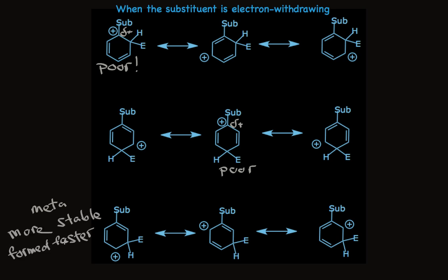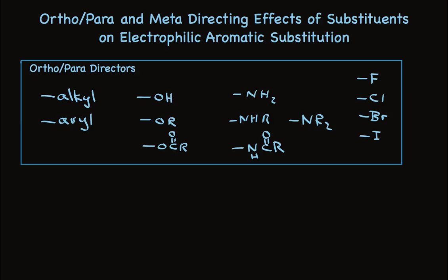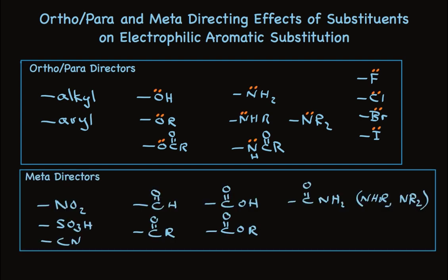Meta directors, as they're called — substituents that favor substitution at the meta position — are all electron-withdrawing substituents. Meta substitution is always slower than benzene overall, but it is favored relative to ortho and para for these groups. Looking at the table, alkyl and aryl groups are electron-donating by induction, while other ortho/para directors have lone pairs on the heteroatom. All groups in the meta-director box withdraw electron density, making ortho and para substitution especially slow.